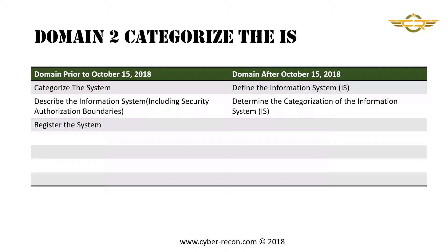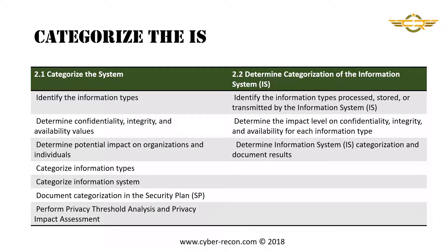Domain 2 is modified slightly, going from three subject areas to two subject areas. Before October 15th, the subject areas are: categorize the system, describe the information system including the security authorization boundaries, and register the system. After October 15th, the subject areas are: define the information system, and determine the categorization of the information system. The following slides provide additional detail on these subject areas.